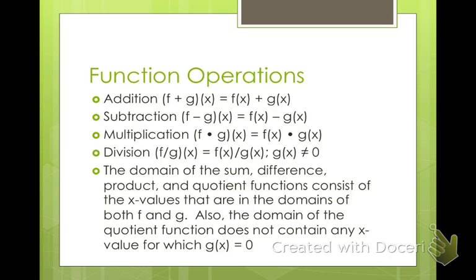So this is just to keep in mind: the domain of the sum, difference, product, and quotient functions consists of the x values that are in the domains of both f and g. After you combine your functions, you have to give the domain — any values that introduce negative numbers under a radical, imaginary numbers, or division by zero are excluded. Also, the domain of the quotient function does not contain any x value that makes your denominator zero.